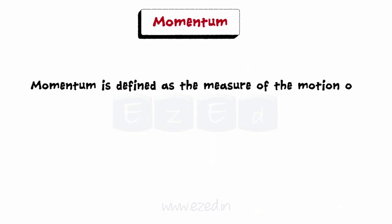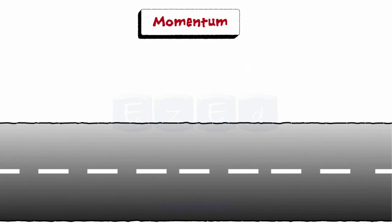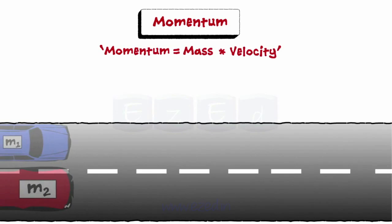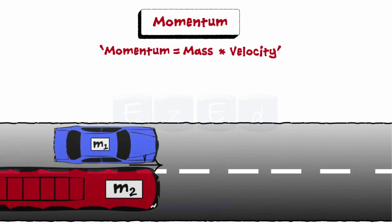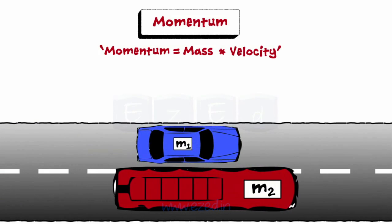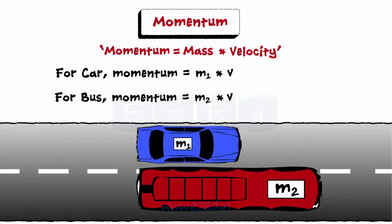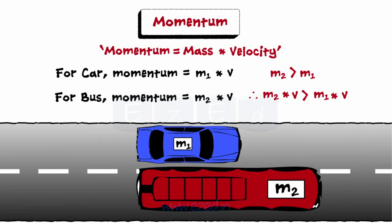Momentum is defined as the measure of the motion of a moving body. The product of mass and velocity is called momentum. Consider two automotive vehicles, a bus and a car, travelling along a plane road. If both have the same velocity, which one can be stopped first? Of course, it is difficult to stop the bus compared to a car. They both have the same speed but different masses. The bus has more mass compared to the car, because of which the momentum of the bus is also more. Hence, much more effort is needed to stop the bus in comparison to a car travelling at the same velocity.